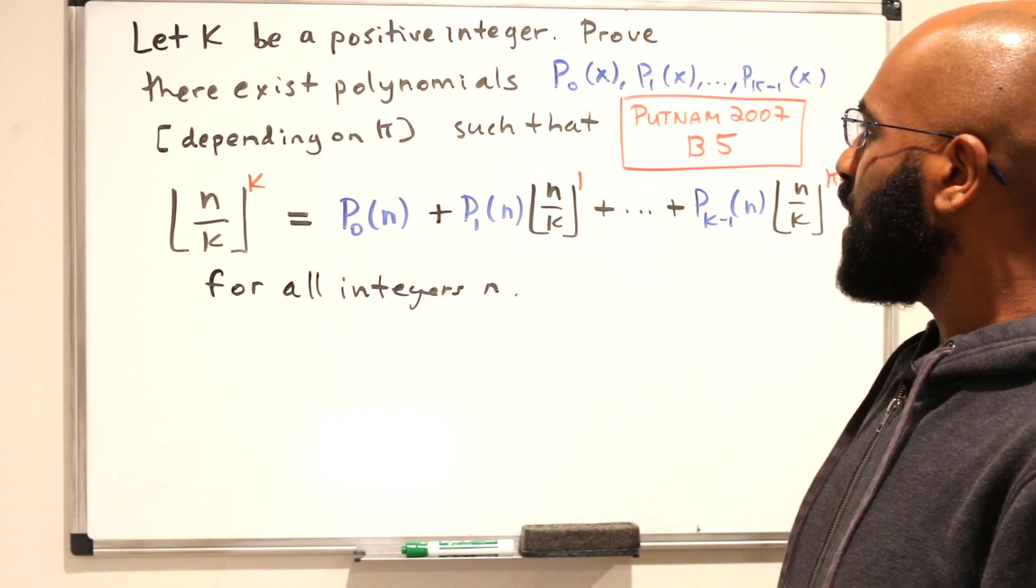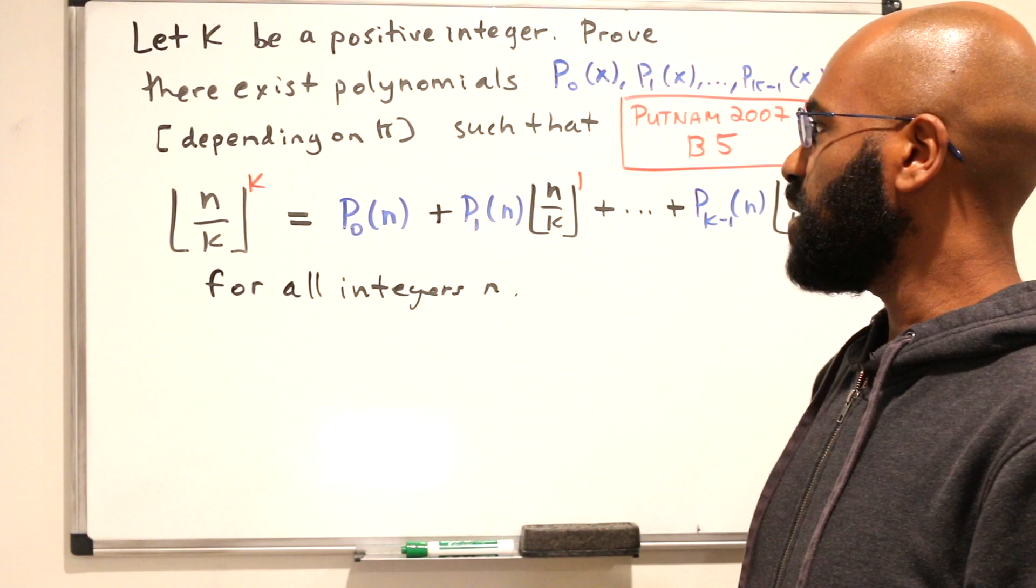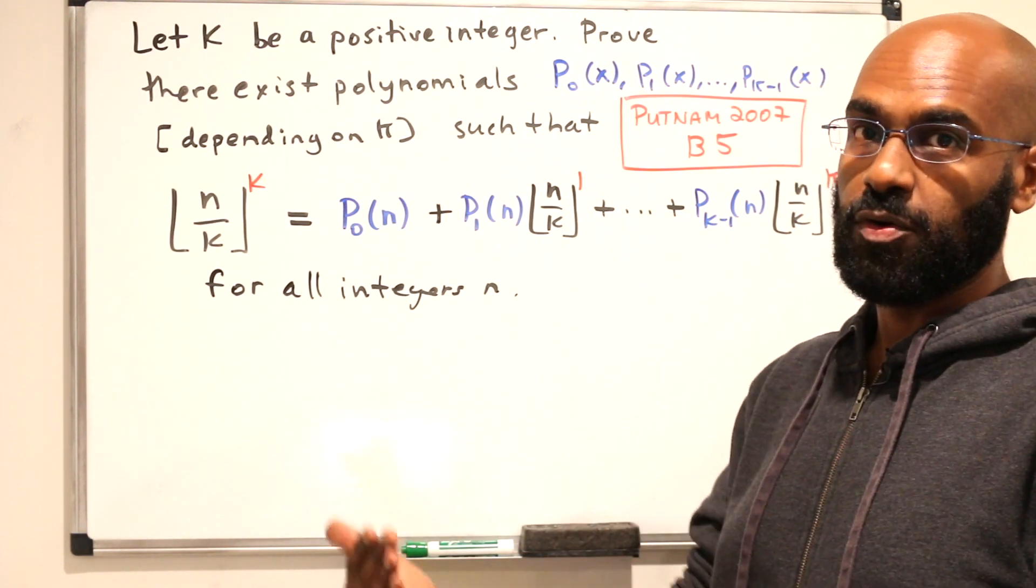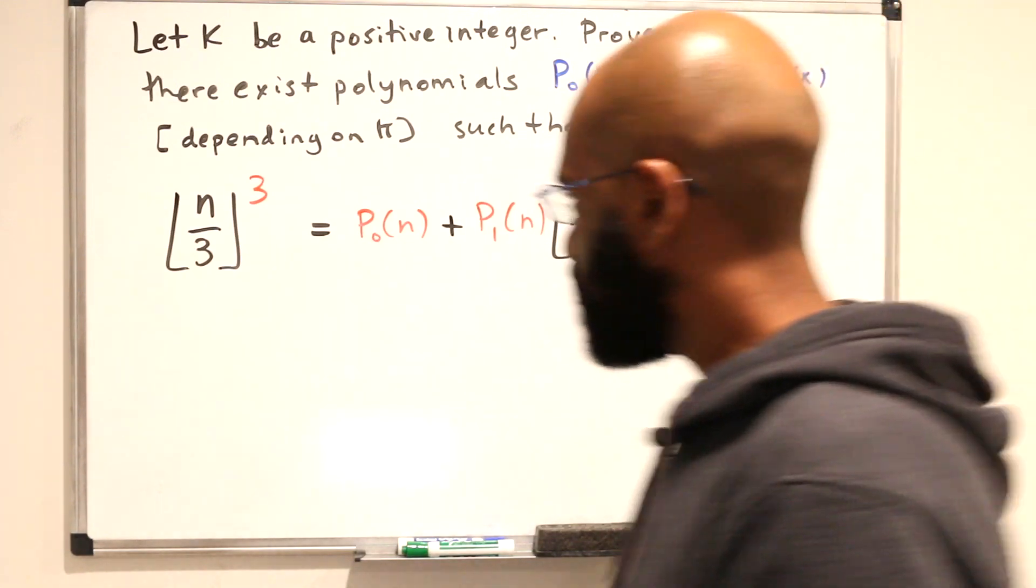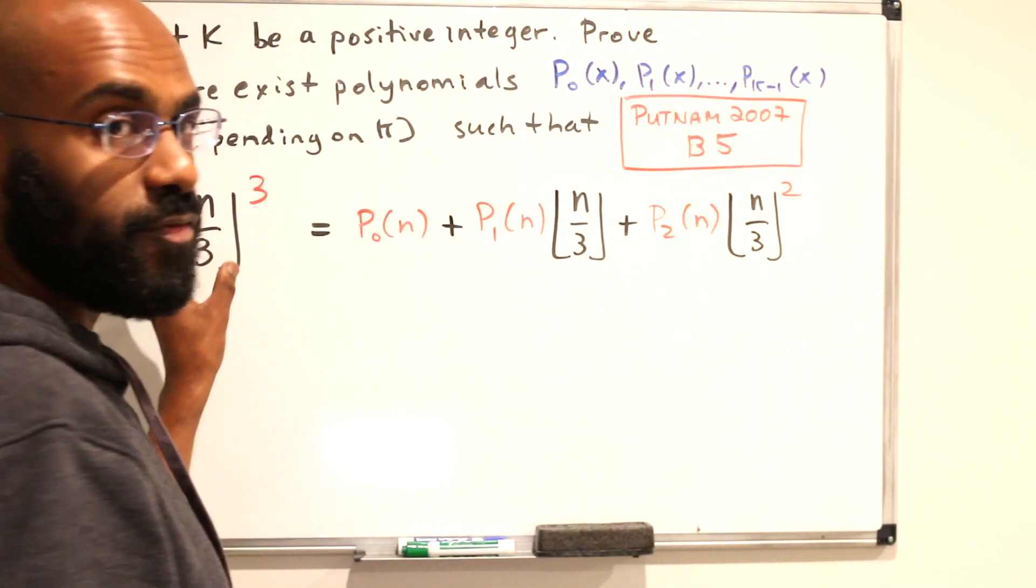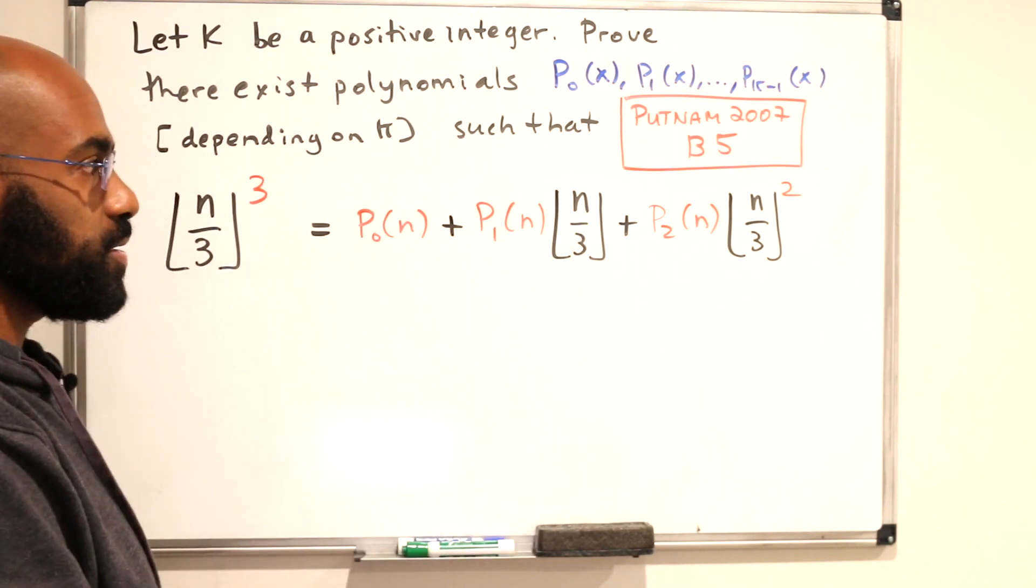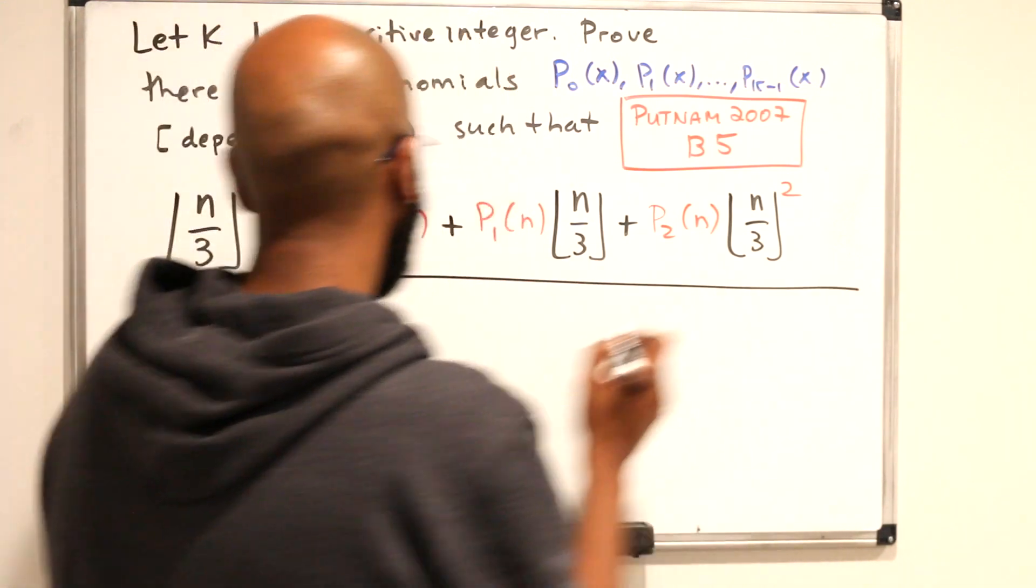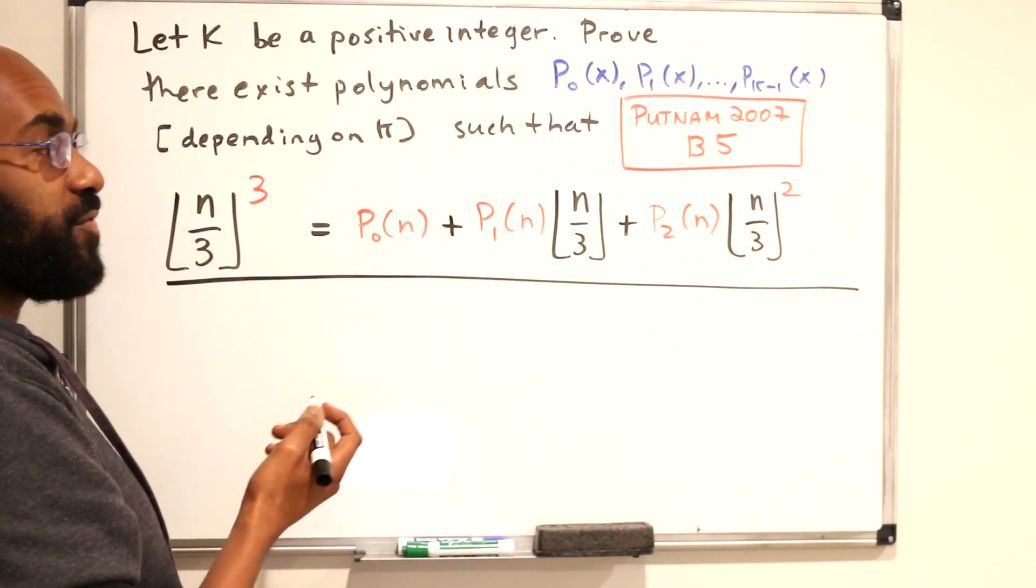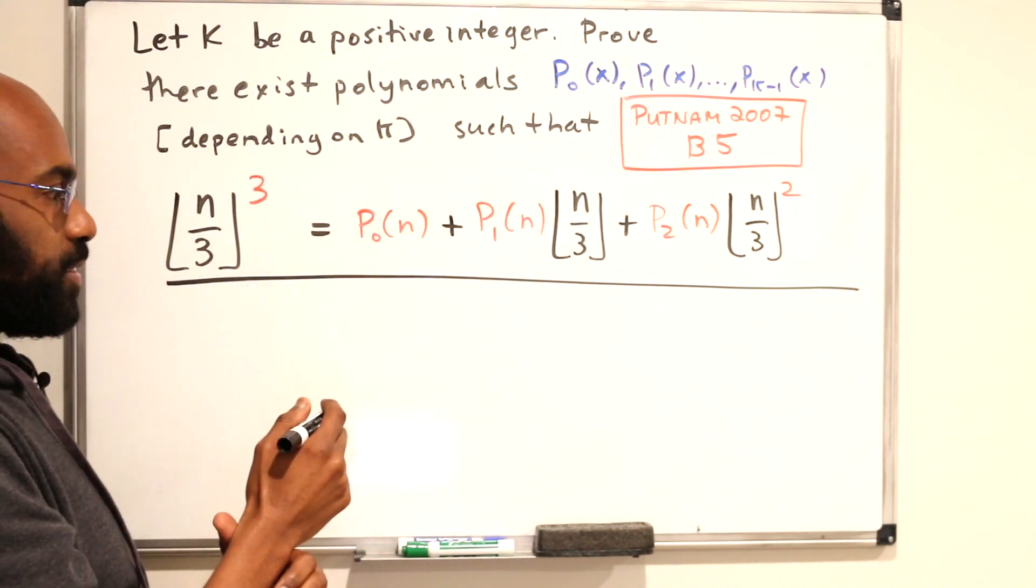So what I want to do is look at this expression when k actually equals 3 and see if we can make sense of it to get an idea of what to do for general k. Alright, so when k is 3, our goal is to prove that the cube of the floor of n over 3 can be represented as an expression that looks like this. So what I want to do is investigate what the floor of n over 3 looks like for different values of n and then see if we can use that to come up with an expression like this.